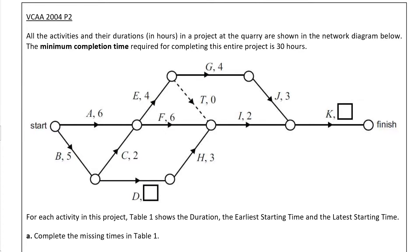Alright, so let us answer this question before us. It is taken from VCAR 2004 paper 2. It says all the activities and their duration in hours in a project at the quarry are shown in the network diagram below. The minimum completion time required for completing the entire project is 30 hours. They immediately have told me that the total time to complete this is 30 hours, so I'll put a 30 here just to start with.